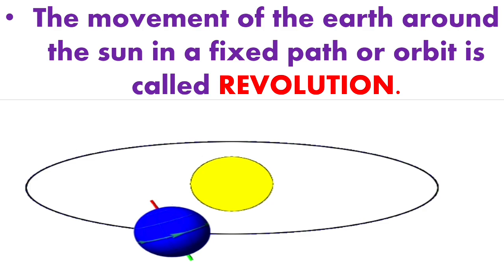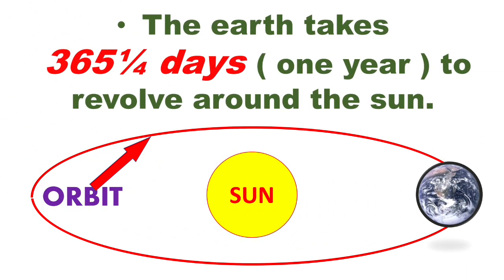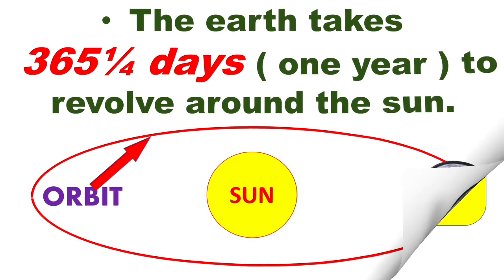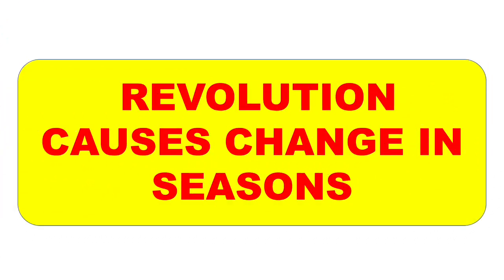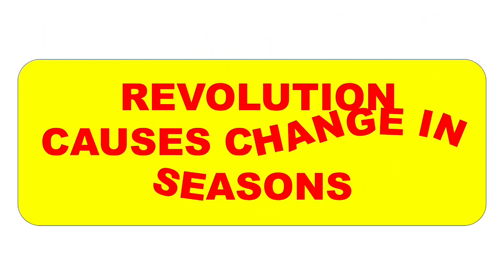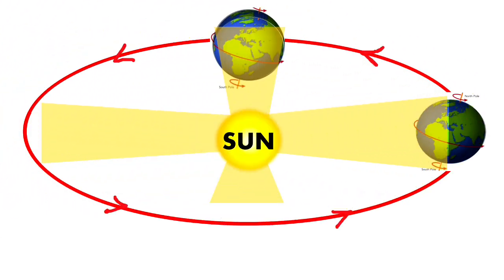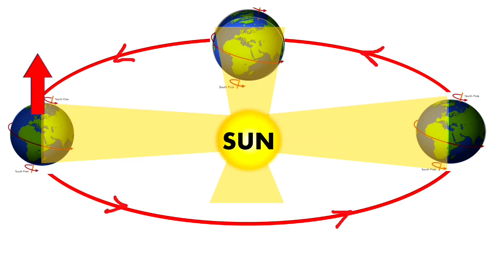The earth goes around the sun in an elliptical orbit. The earth takes about 365 and one-fourth days to revolve around the sun, but we consider a year as consisting of 365 days. Just as rotation causes day and night on the earth, revolution also causes change in seasons. As the earth moves around the sun, the tilt causes the sun's rays to fall more directly on either the northern hemisphere or the southern hemisphere depending on the position of the earth.